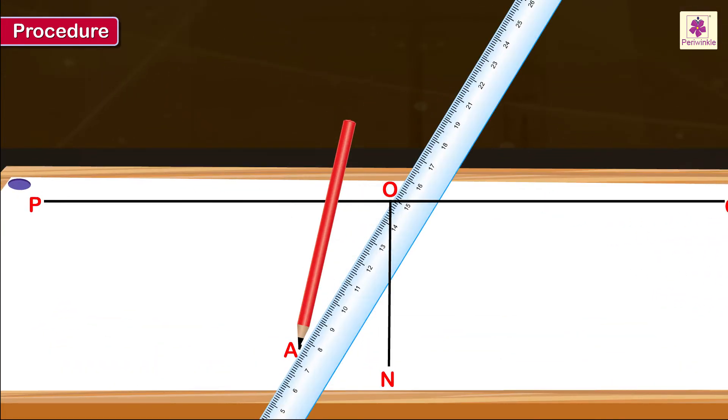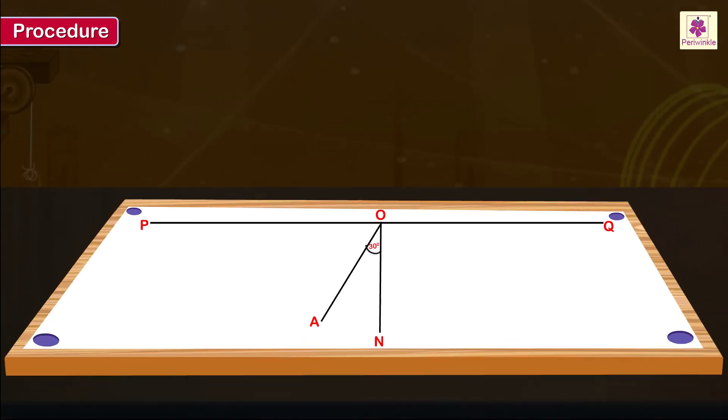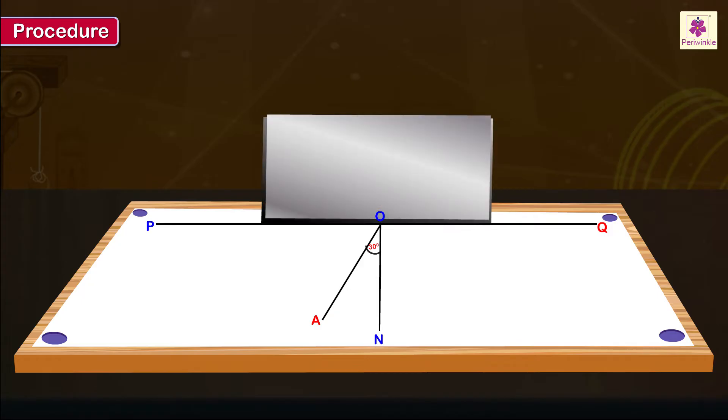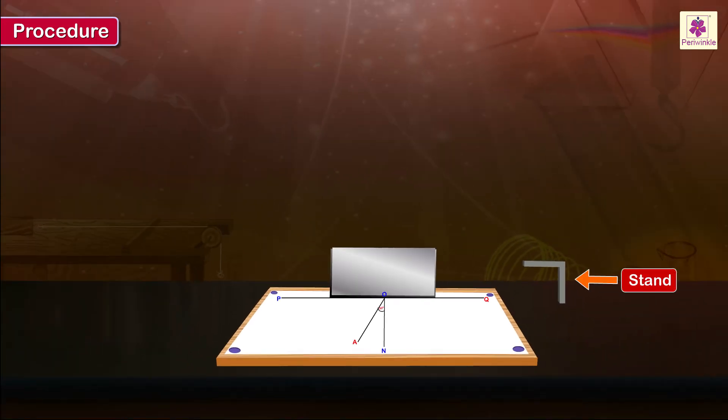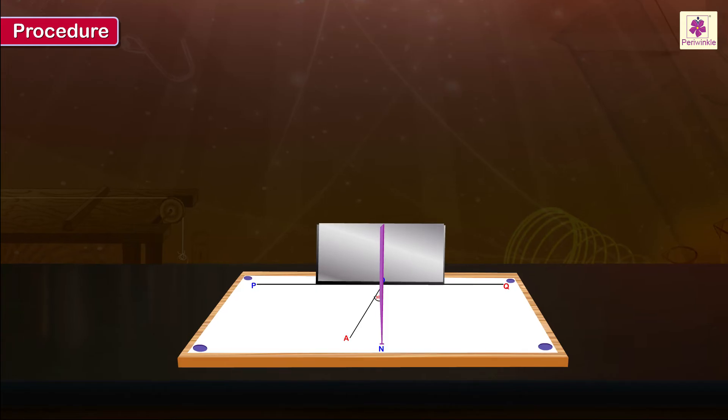Draw angle AON equal to 30 degrees, point A lying in the interior of angle PON. Place the edge of the flat metal sheet on segment PQ. Use its stand to keep it perpendicular to the drawing paper sheet. Place the edge of the sound absorbing screen on segment ON so that the screen lies perpendicular to the drawing board and also to the metal sheet.